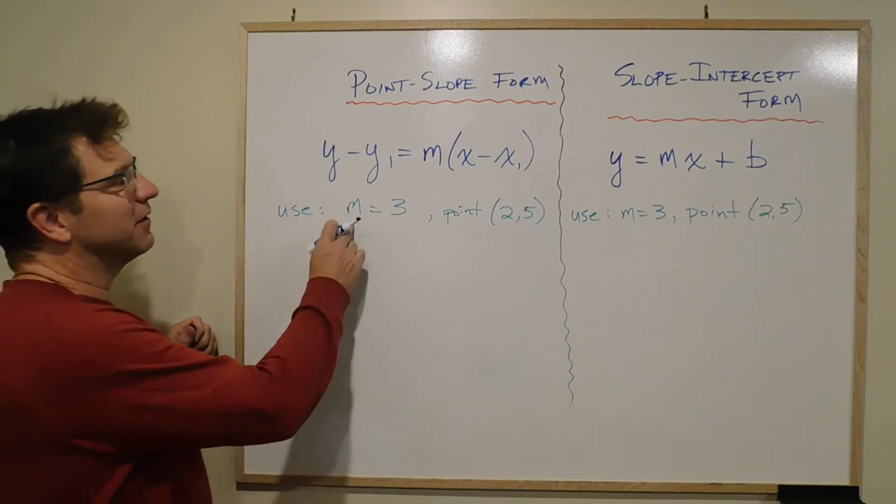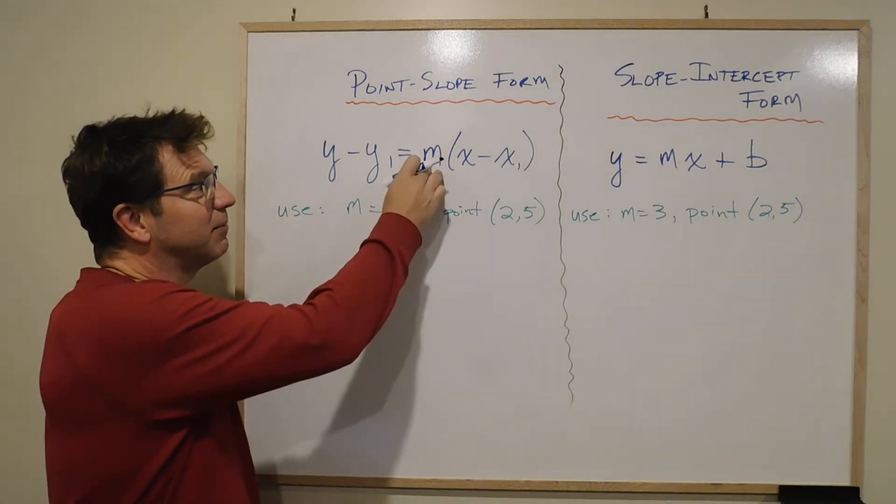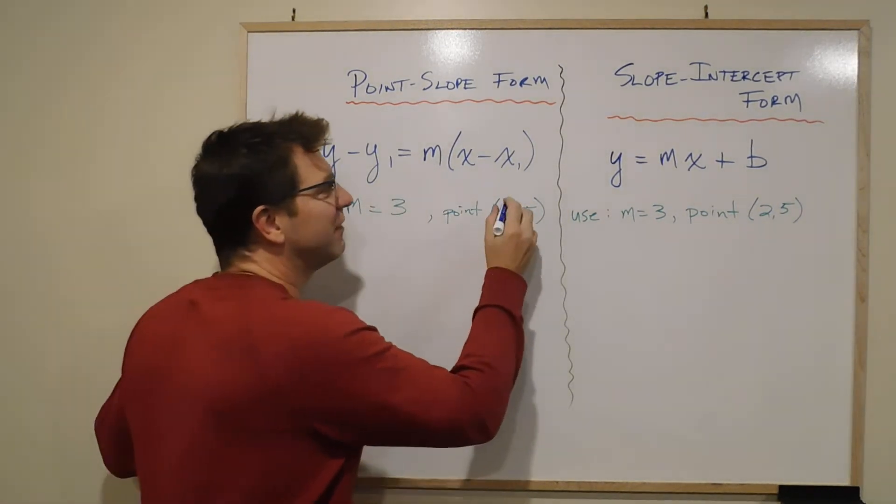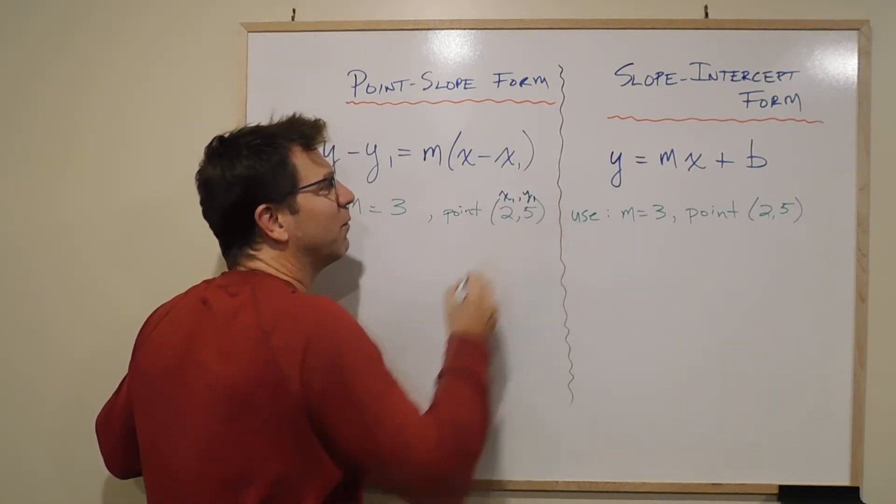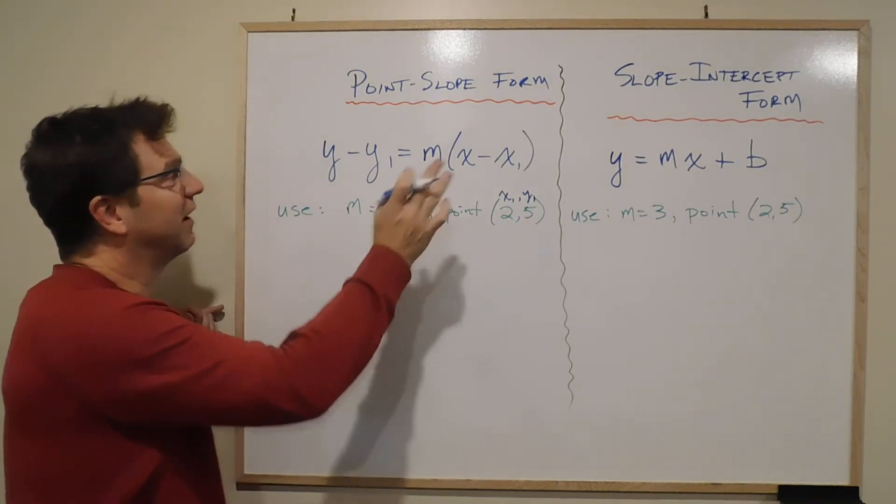So I know the slope, which we generally use m for, is going to be 3. So I have to put 3 in for the m. I also know the point is 2, 5. And this is x1 and y1. So x1 is 2 and y1 is 5. So here we go.